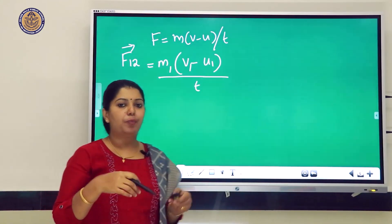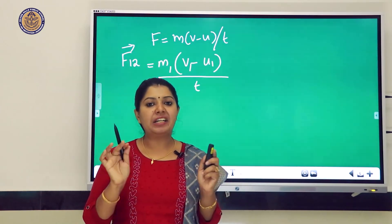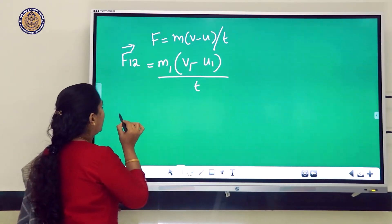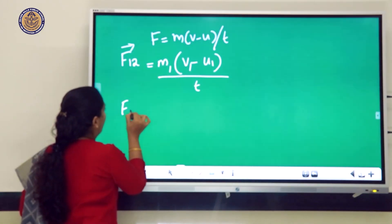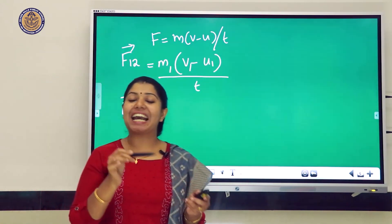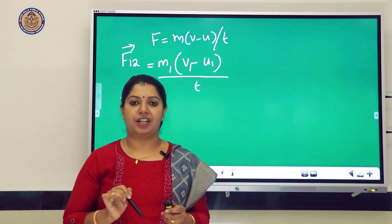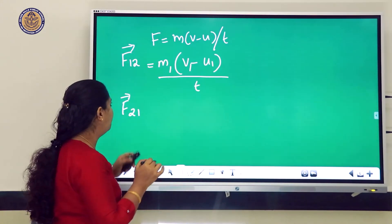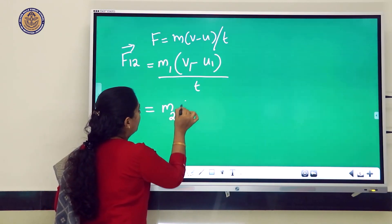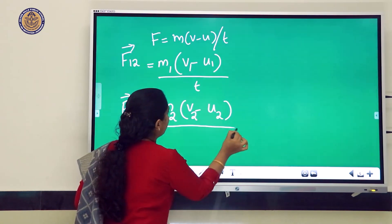The time taken is the same for both forces, so no subscript is needed on t. Similarly, F₂₁ is the force exerted by the second object on the first object: F₂₁ = m₂(v₂ − u₂) / t.